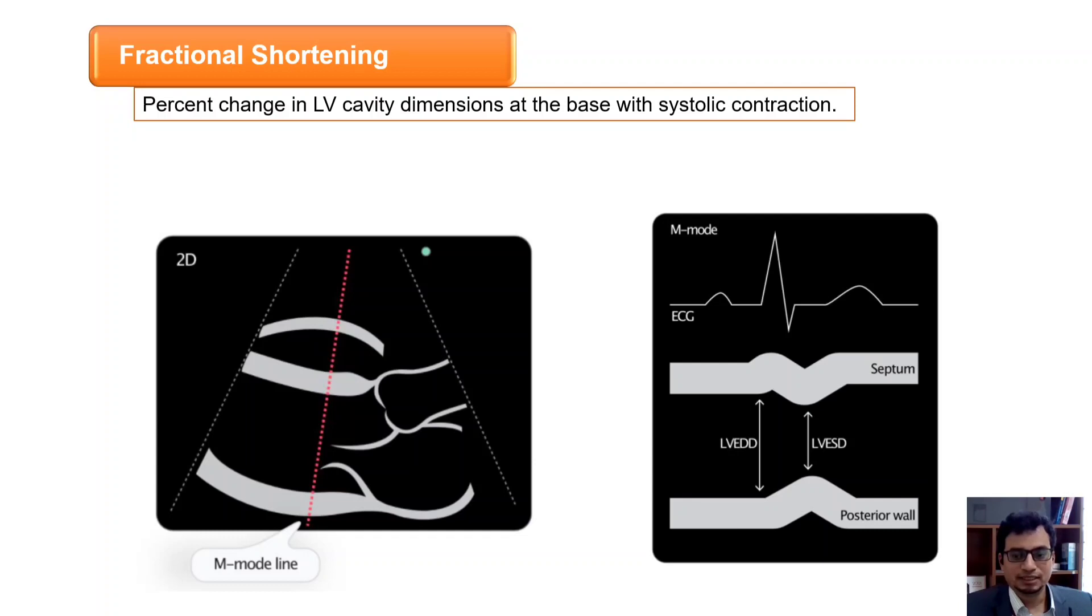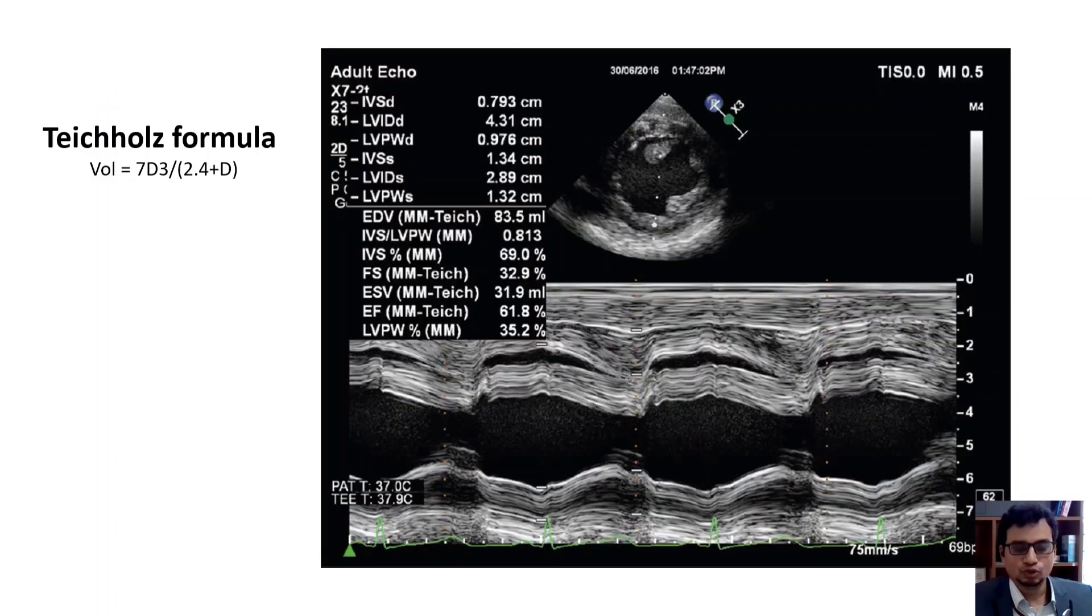Two measurements are taken: left ventricle end diastolic diameter and left ventricle end systolic diameter. Then this formula is applied to calculate fractional shortening. The value more than 28% are considered to be normal.